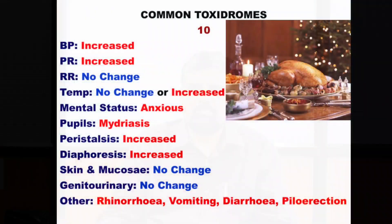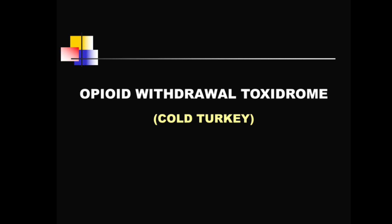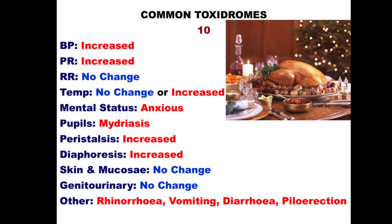Number ten: the image shows an attractive picture of a turkey, appearing to be a Thanksgiving or Christmas dinner. In slang, this clinical picture is referred to as cold turkey — slang for heroin withdrawal. Heroin is an opioid, and the important manifestations of withdrawal from opioid addiction include piloerection, which gives rise to the slang cold turkey, where the skin has a puckered appearance like frozen meat taken out of the freezer. We are talking about the opioid withdrawal toxidrome.